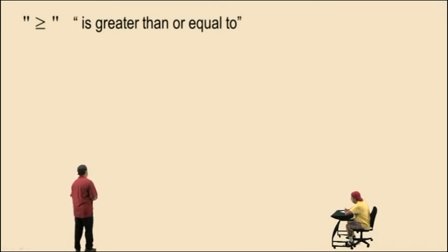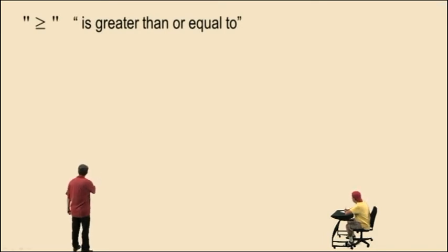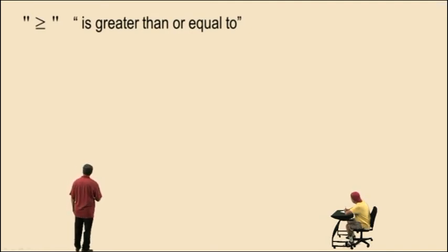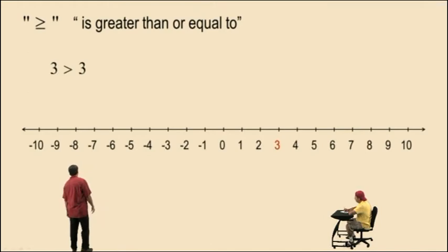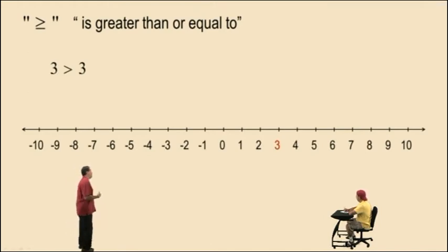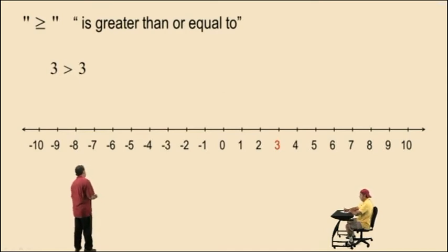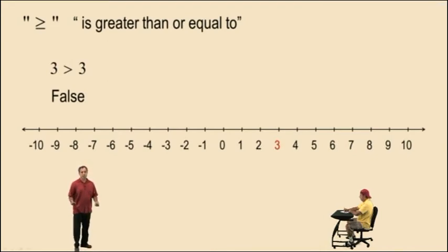Now here we have another symbol. It includes two things — it's an arrowhead pointing to the right, but notice we have a bar on the bottom. That little bar on the bottom represents an equal sign. So 'greater than or equal to' means is greater than or equal to — you have two choices. Let's look at the number line. 3 greater than or equal to 3. The question is: is 3 greater than 3? That's false — 3 is actually equal to 3.